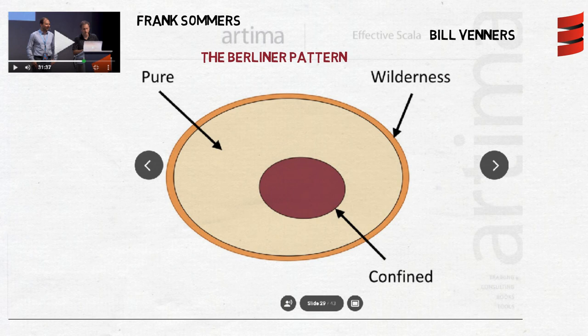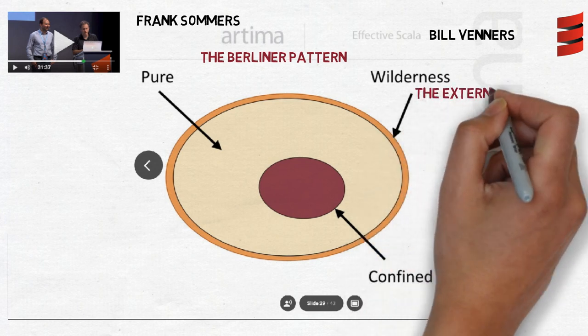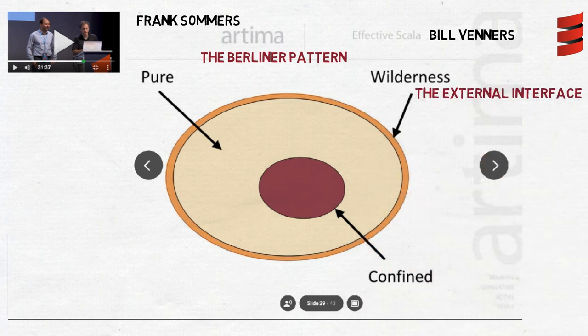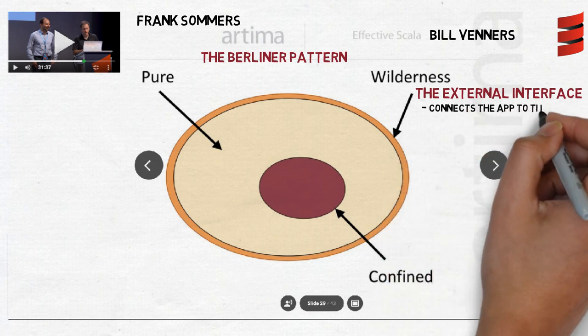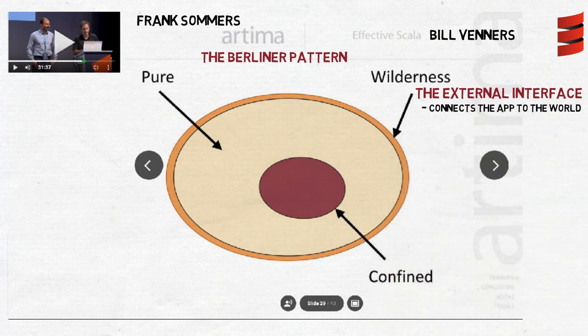we can think of every application as having three layers: the external interface, the internal interface, and the space in between. The external interface lets our application communicate with other programs, be it the backend, other web services, or the operating system.